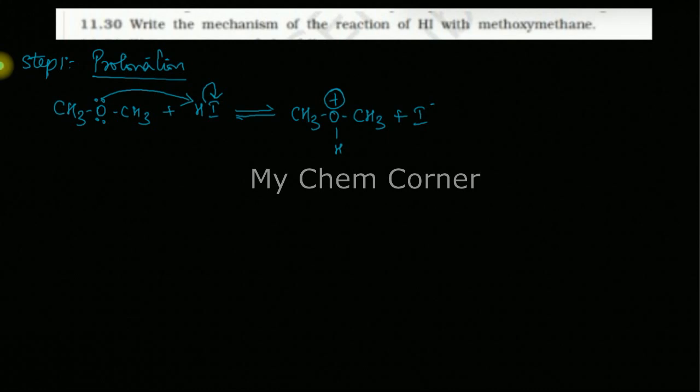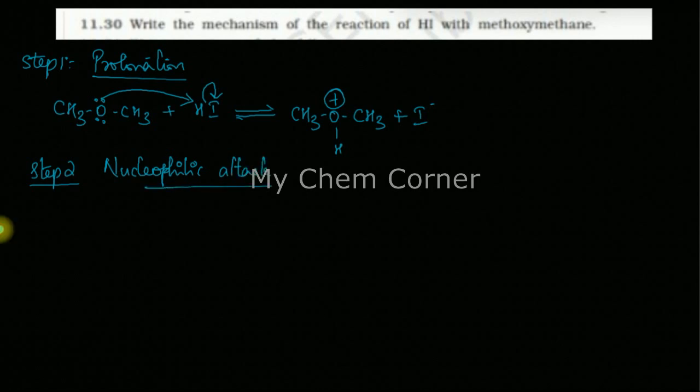Now the next one is nucleophilic attack of the iodide. So step 2 is going to be nucleophilic attack of iodide, the iodide that went out. So we have CH3-O-CH3 with a positive charge and then iodide.